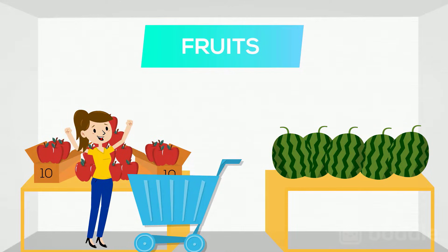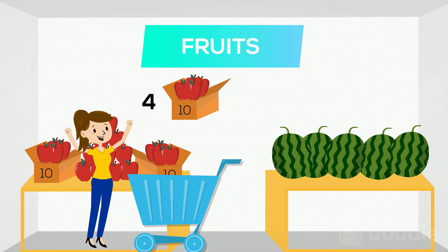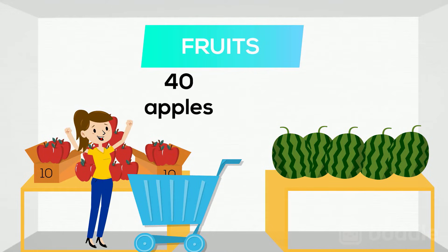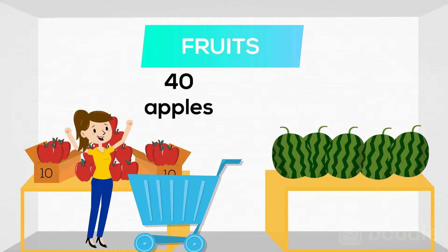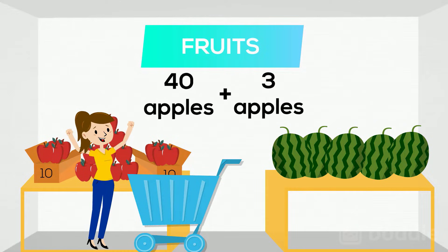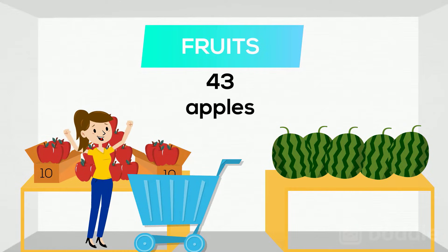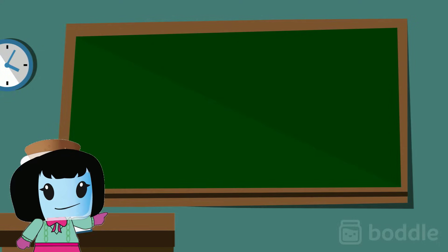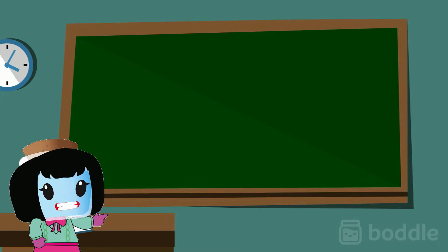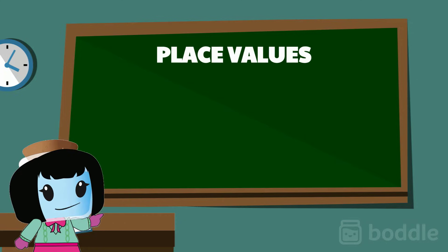This will make our shopping so much easier, because if we get four bundles of 10 we already have 40 apples. Then we just need to get three separate apples to have a total of 43. These bundles of 10 help us to understand place value.